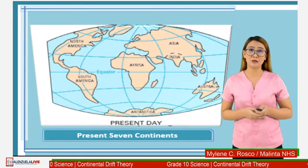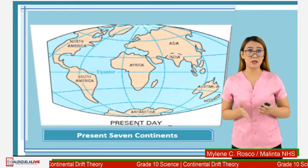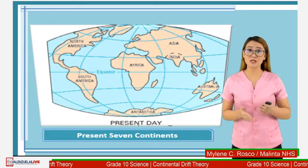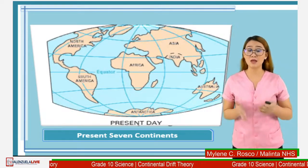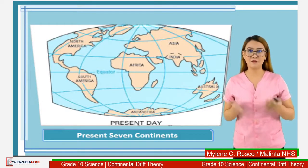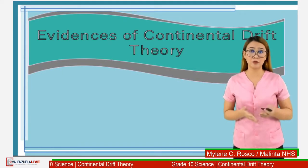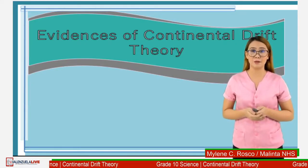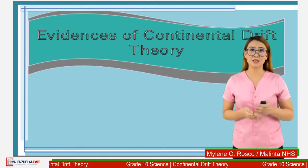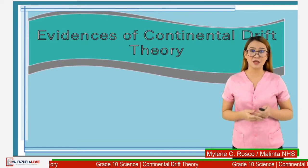During the time of Wegener, the scientific community did not accept his theory. According to scientists, the matching of the edges of the continents was just a coincidence. But that did not make Wegener stop looking for other evidences to prove the continental drift theory. Alfred Wegener continued looking for evidences to support the theory of the drifting of the continents.